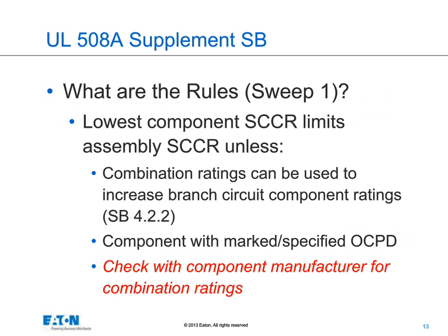When looking at the Bussmann method for determining the SCCR of industrial control panels, we use a two-sweep method. In sweep one, we look only at components — anything other than a fuse or circuit breaker: contactors, starters, switches, and controllers. We try to use combination ratings if possible, ensuring we supply the specified overcurrent device to get those combination ratings. In many cases it may not be obvious what those ratings are, so you may have to check with the manufacturer.